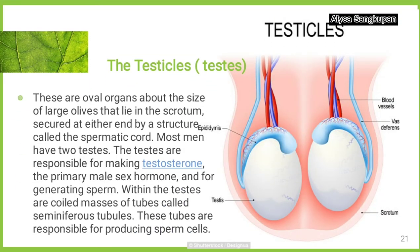Testicles. Most men have two testes, and the testicles produce testosterone and make sperm. They are two oval-shaped organs located inside the scrotum. Within the testes are coiled masses of tubes called seminiferous tubules. These tubes are responsible for producing sperm cells.